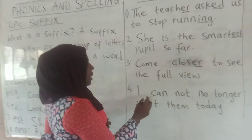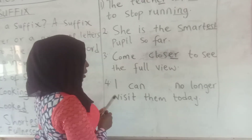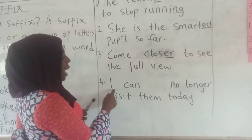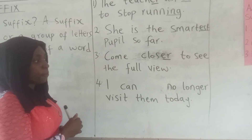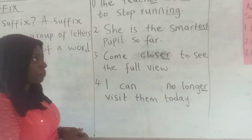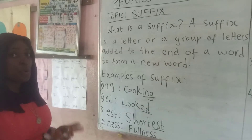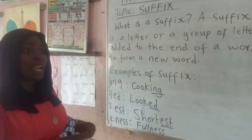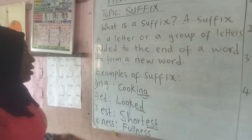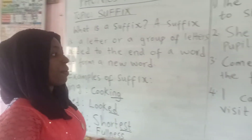Number four: 'I can no longer visit them today.' Can you see the suffix in this sentence? Very well. I can also see 'er' in 'longer'. So to recap, suffixes are letters we add to the end of words to make new words. They are not words per se, but letters that when added to the end of existing words, you can form new words — like 'ing', 'ed', 'est', 'ness', 'er', and so on.